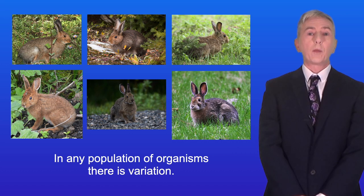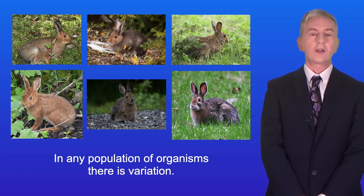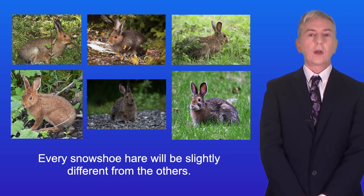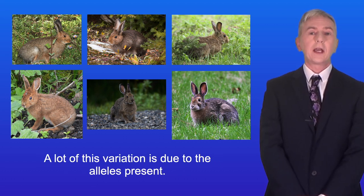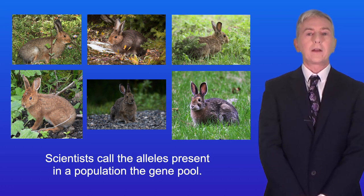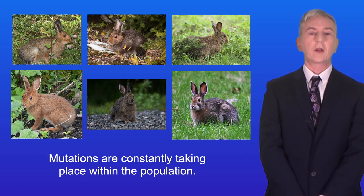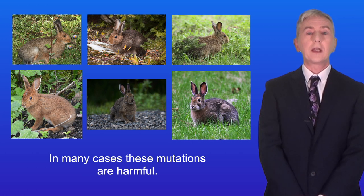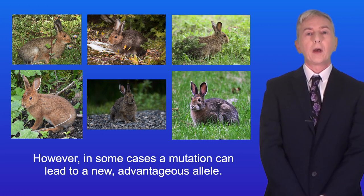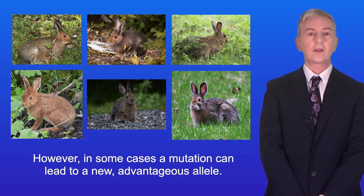In any population of organisms, there's variation. Every snowshoe hare will be slightly different from the others, and a lot of this variation is due to the alleles present. Scientists call the alleles present in a population the gene pool. Mutations are constantly taking place within the population, and in many cases these mutations are harmful. However, in some cases a mutation can lead to a new advantageous allele.